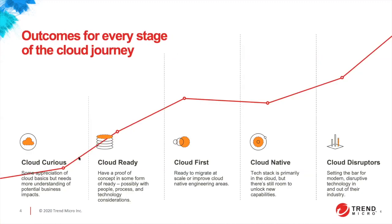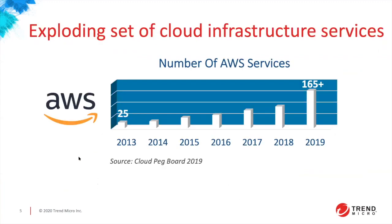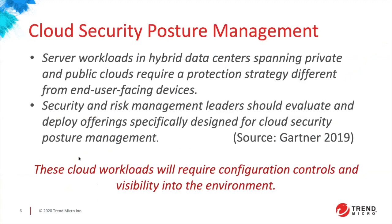Regardless of where your organization is in its cloud migration — some business units could be cloud native or cloud first, others cloud curious — you're going to have issues related to configurations. Cloud providers are delivering more and more services and more complex ways to build out applications. When you combine that with organizations migrating, you get more complexity and more opportunity for misconfigurations.